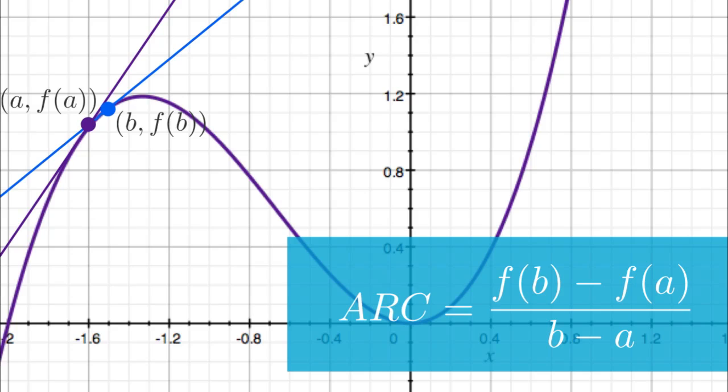The value it's approaching is the instantaneous rate of change, also known as the slope of the tangent line, which is the slope of the function at the tangent point.